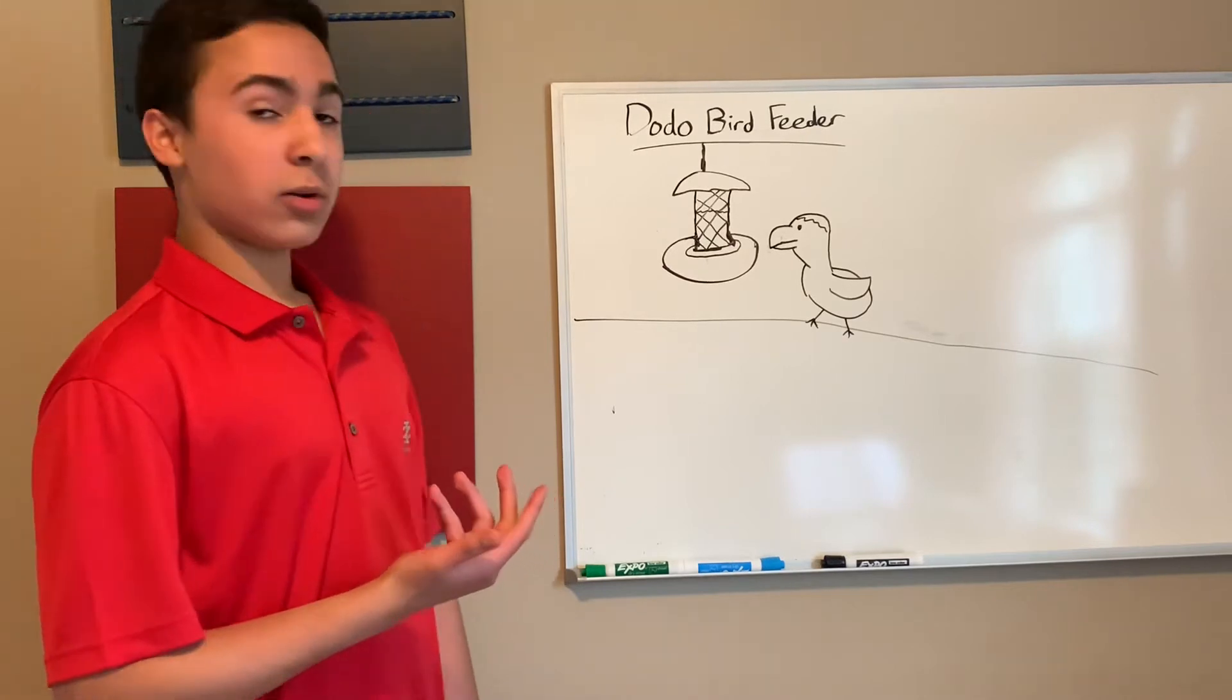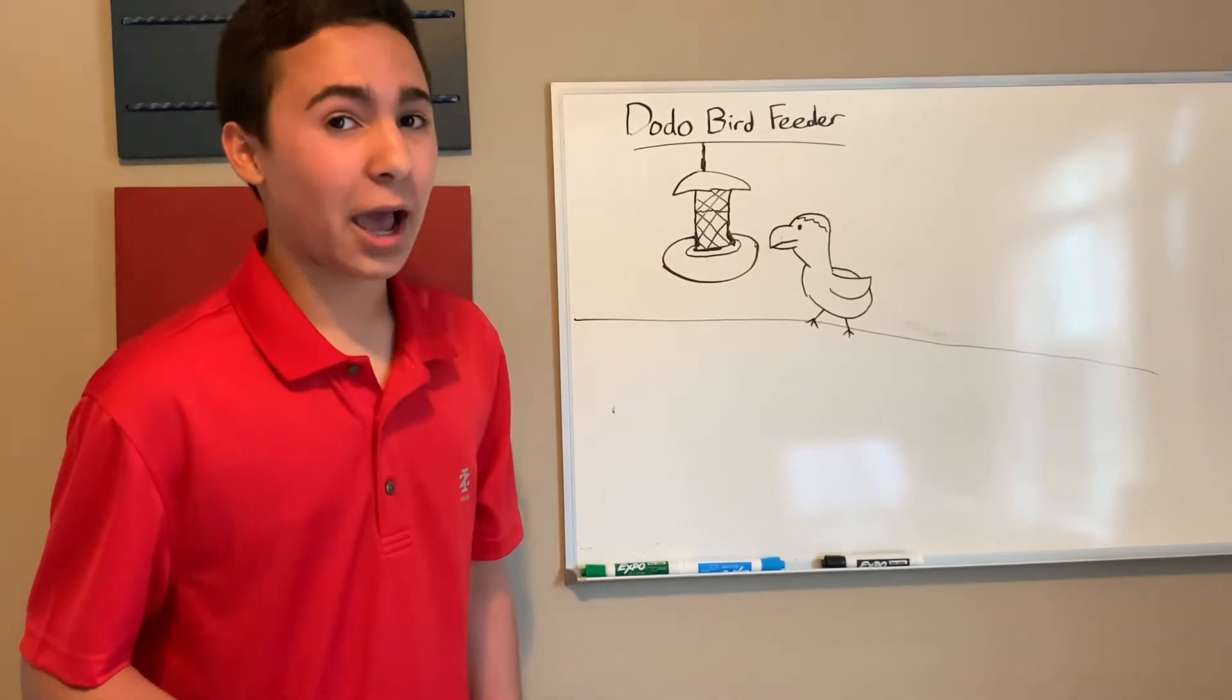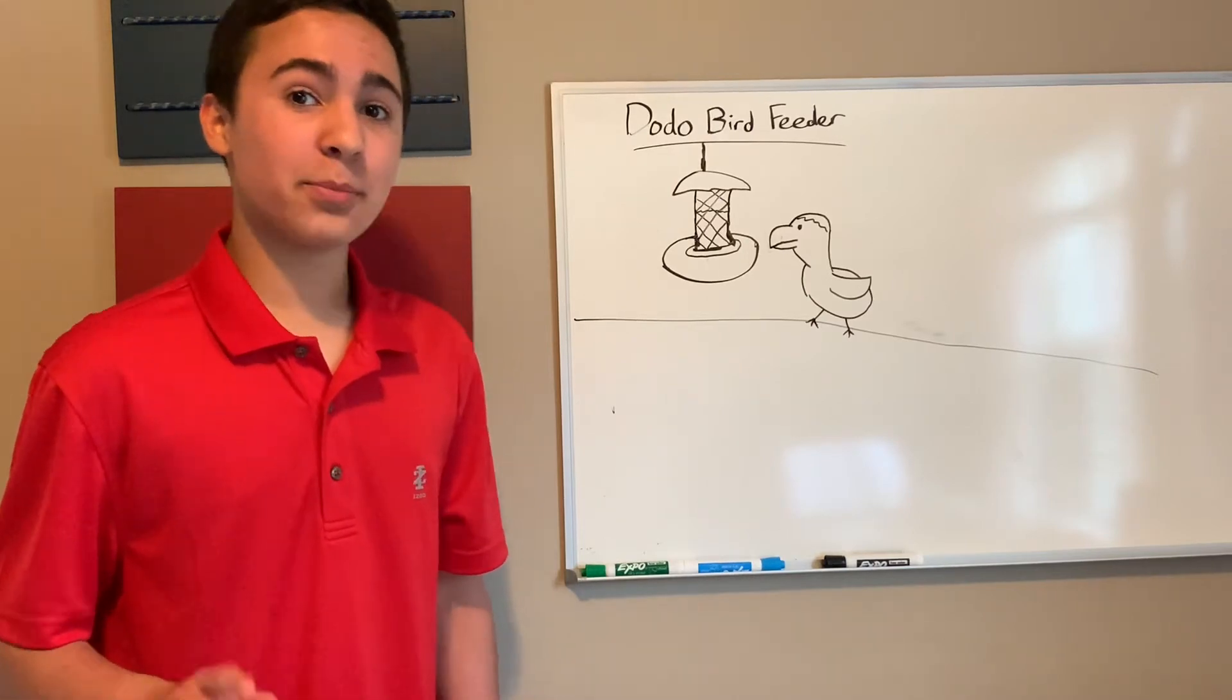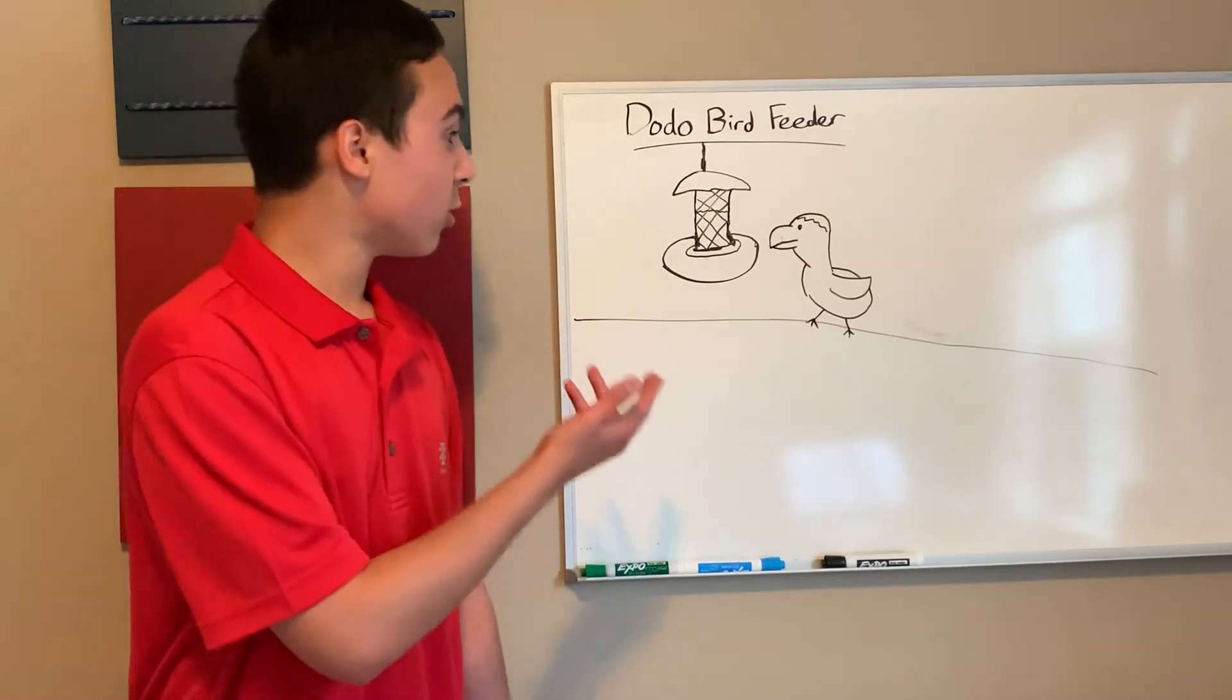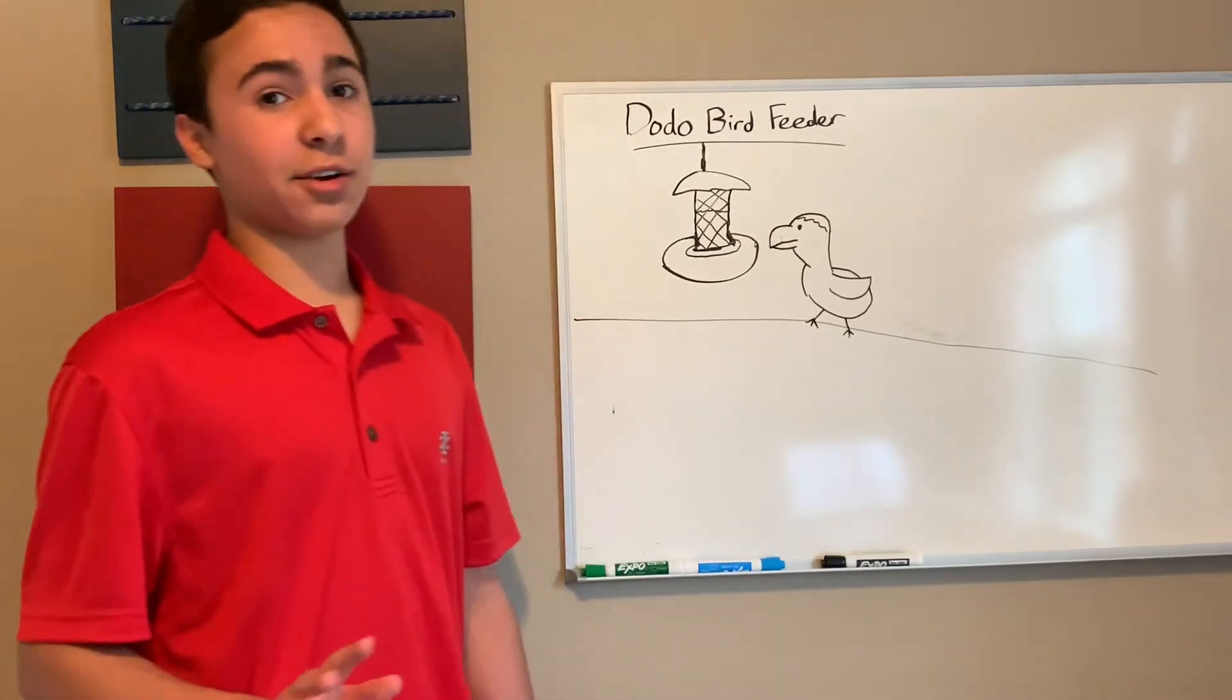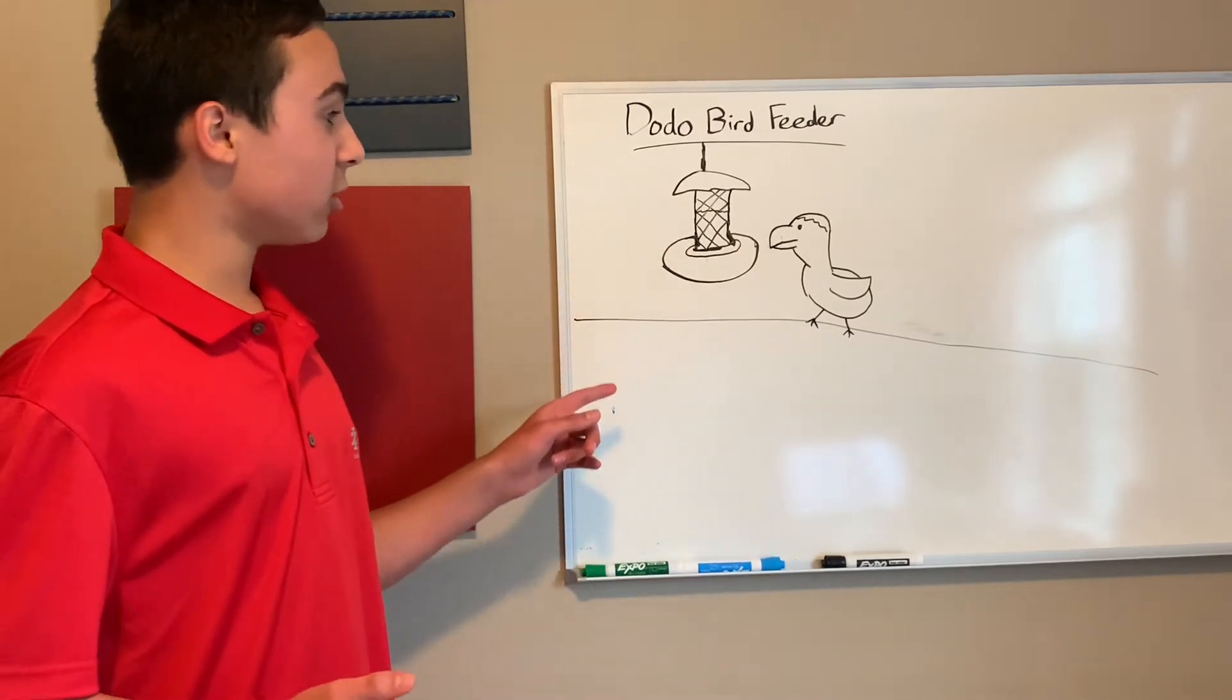Next, we have the dodo bird feeder. Wait, what? Dodo birds are extinct? No, they're not. They live on Antarctica. Now, let me explain. The dodo bird feeder is a low-hanging bird feeder that produces beans. Dodo birds love beans. It's their favorite food.